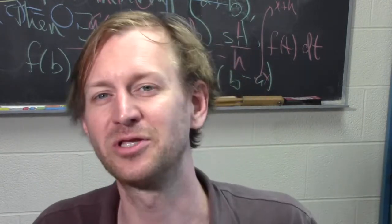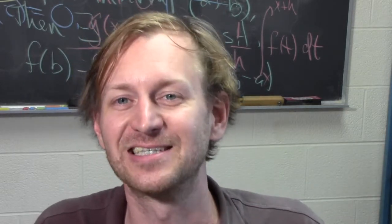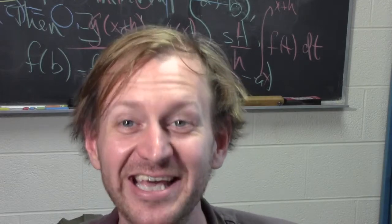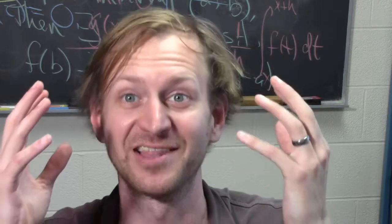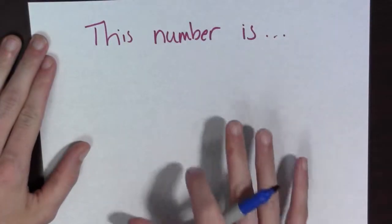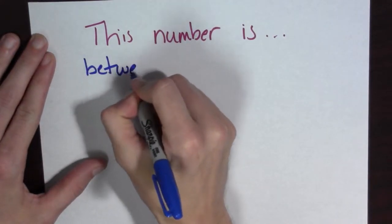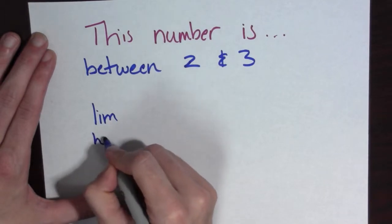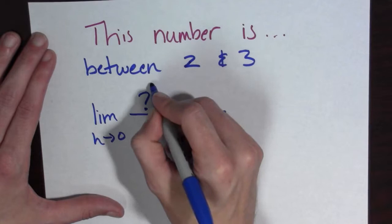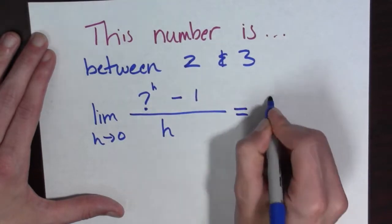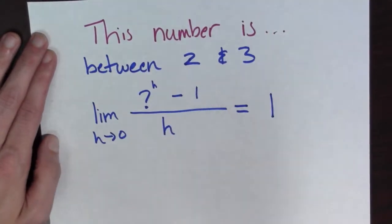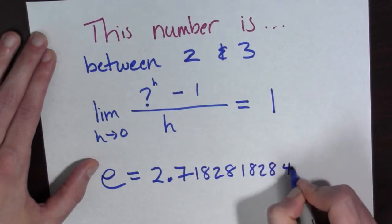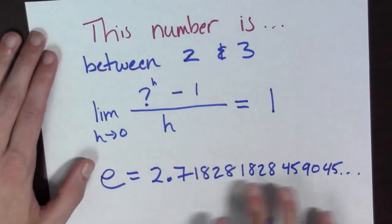If we knew f(x) was continuous, we could use the intermediate value theorem. Showing f(x) is continuous is a little beyond the scope of this course, so you'll just have to trust me that there is, in fact, such a number. It's between 2 and 3, and it's the number such that the limit as h goes to 0 of (that number to the h minus 1) all over h equals 1. It turns out this mysterious number is e, equal to 2.718281828459045..., not repeating.